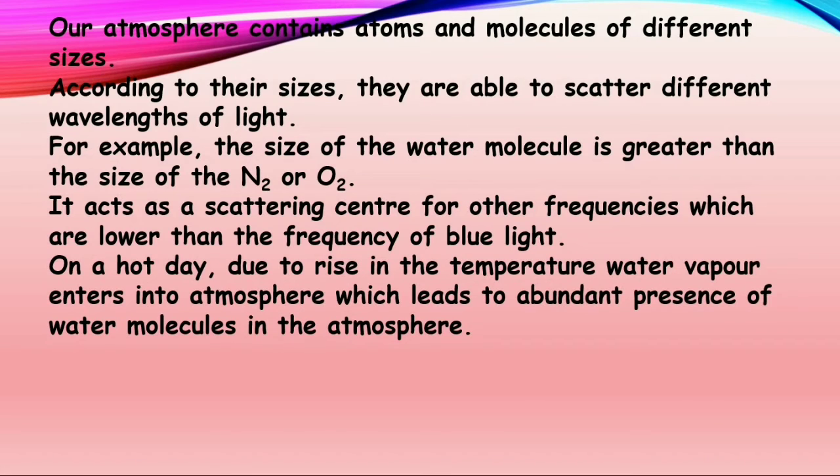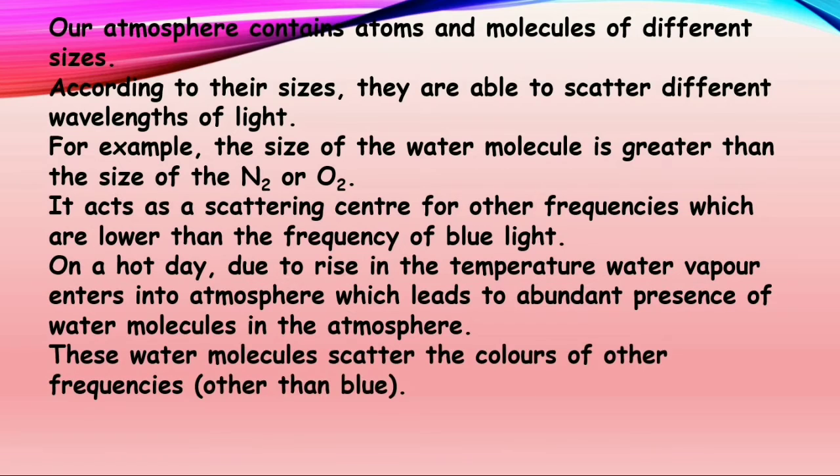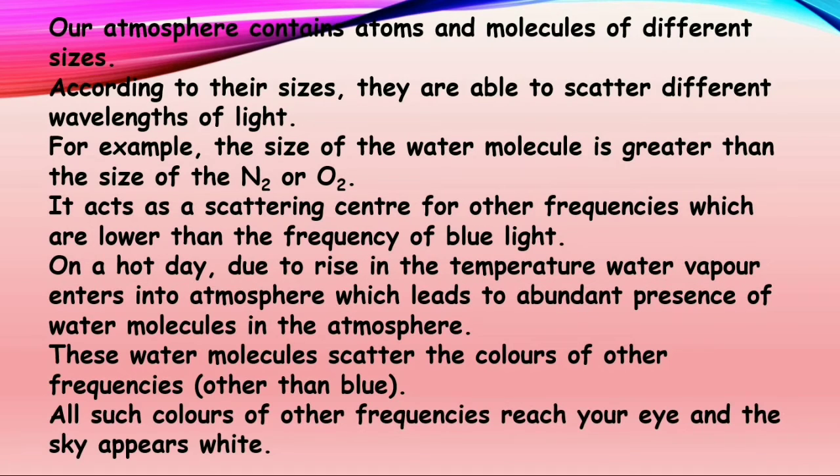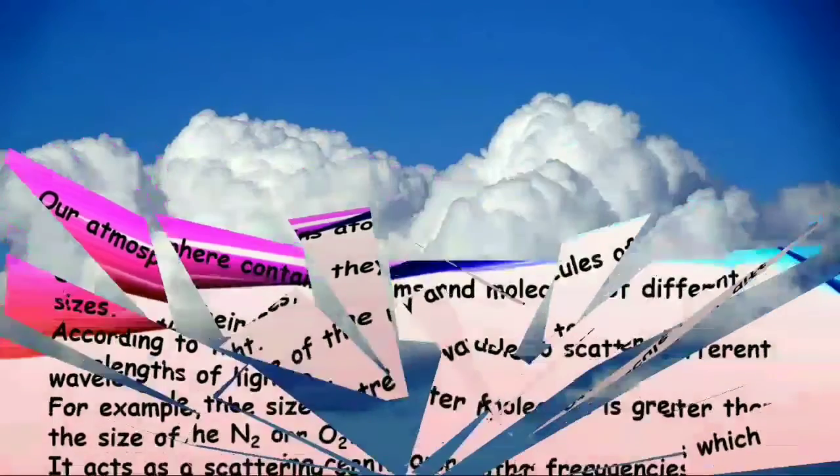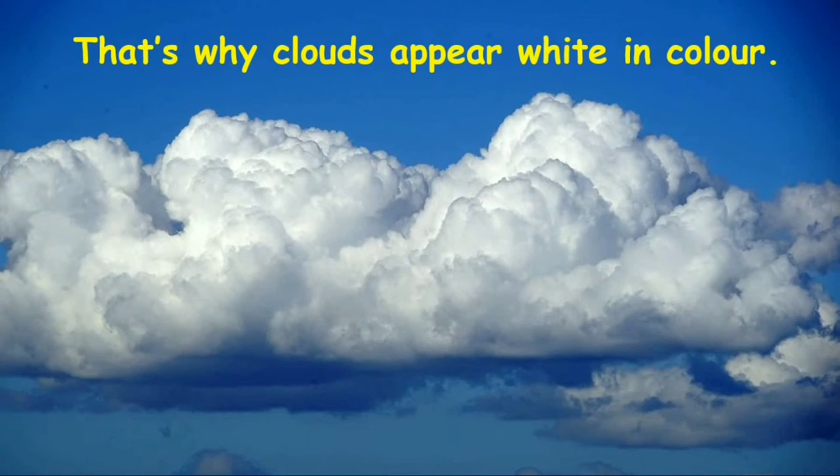So on a hot day due to rise in temperature, water vapor enters into atmosphere which leads to abundant presence of water molecules in the atmosphere. These water molecules scatter the colors of other frequencies, which are other than blue. All such colors of other frequencies reach your eye and sky appears white. That is why clouds always appear white in color, because clouds contain water molecules only.